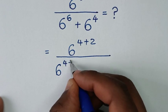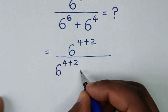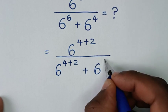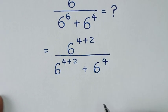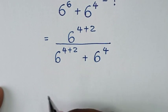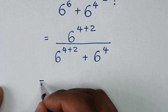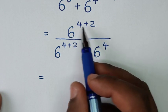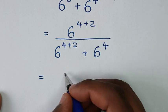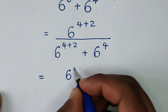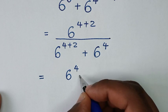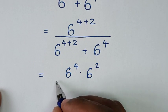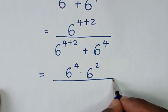Then over, 6 power 6 is the same as 6 power 4 plus 2, then plus 6 power 4. It will be equal to: 6 power 4 plus 2 is the same as 6 power 4 times 6 power 2.